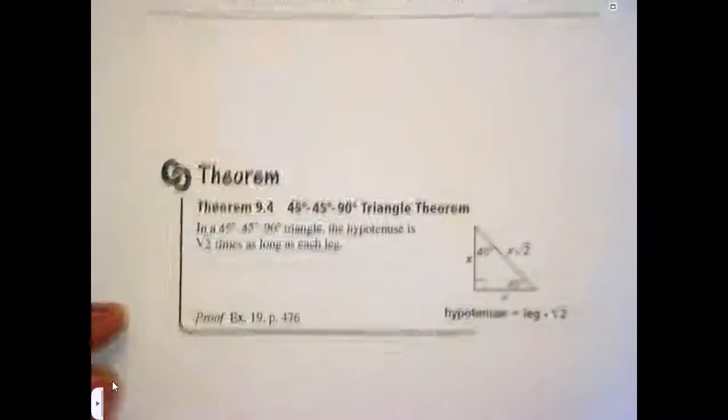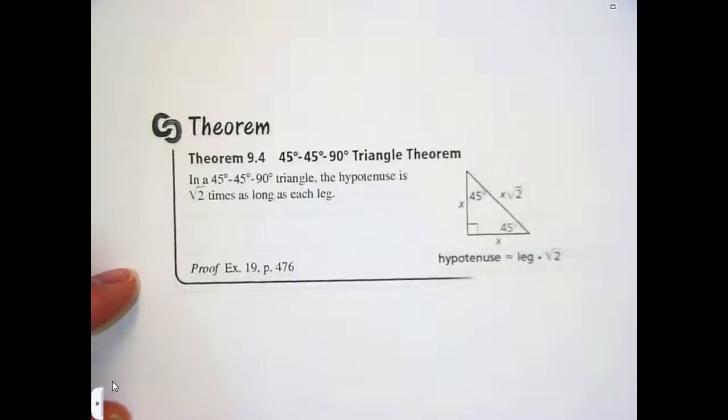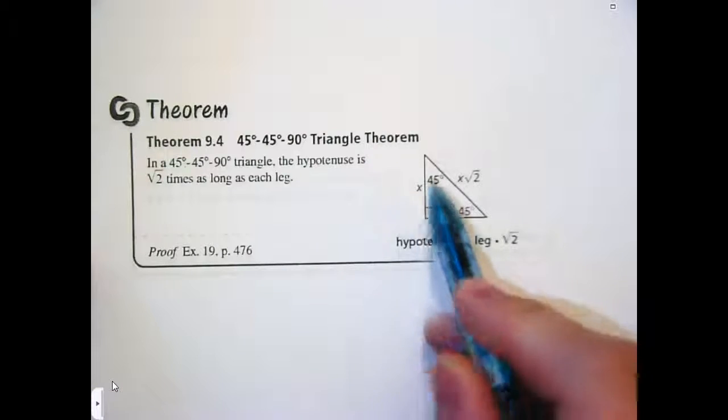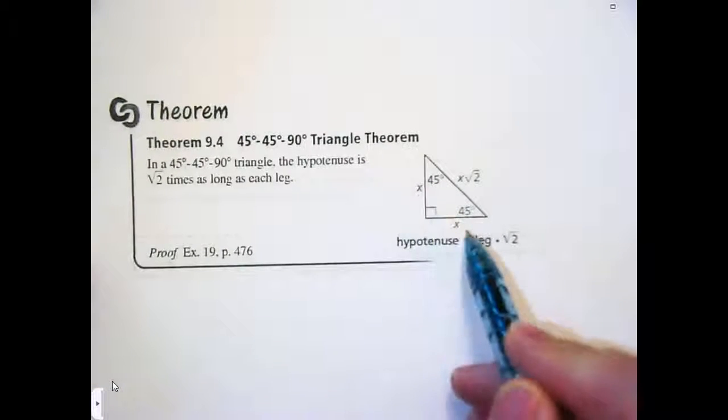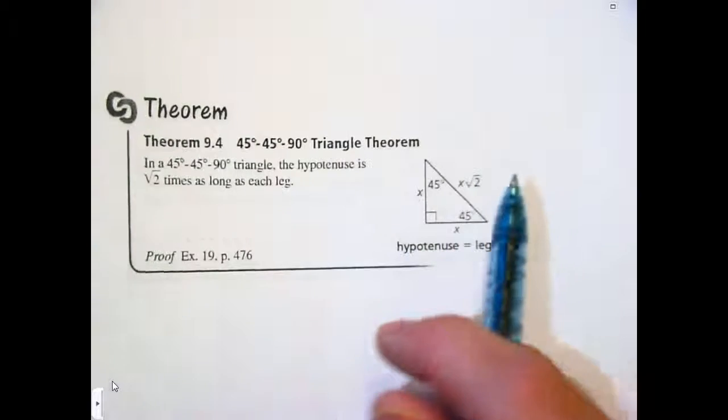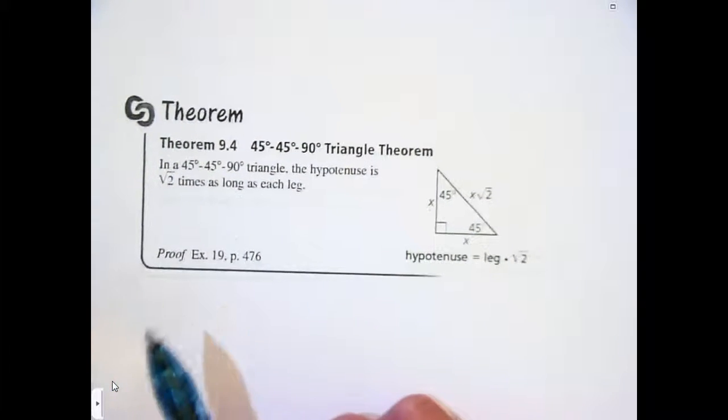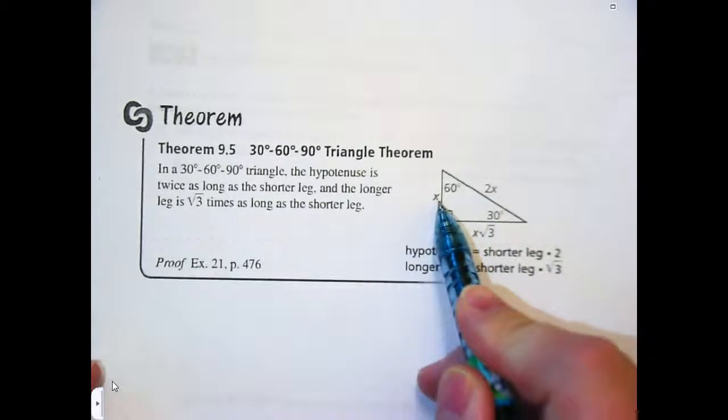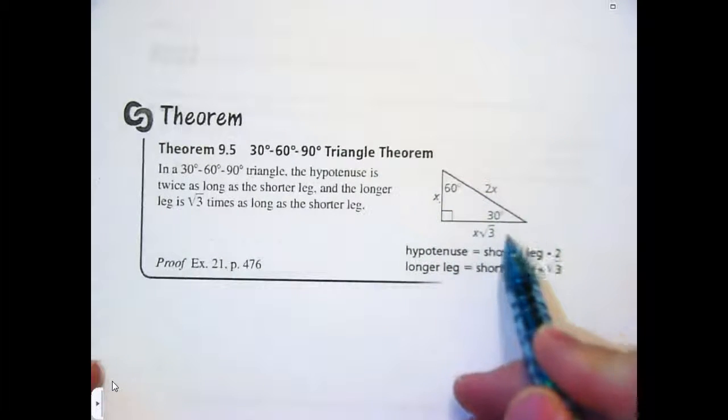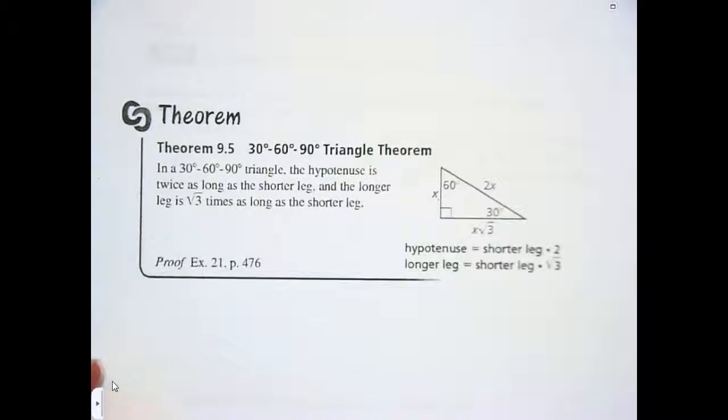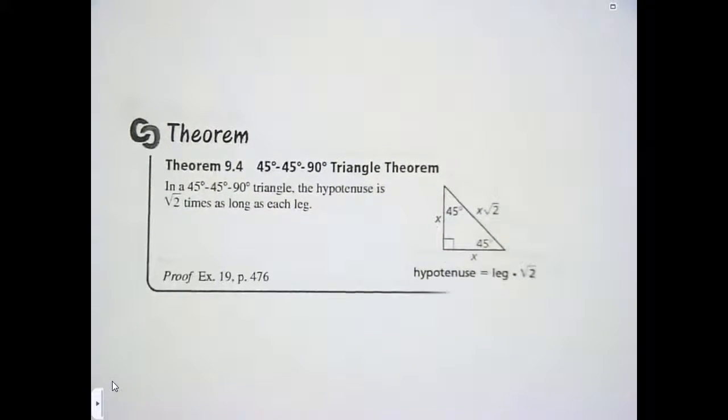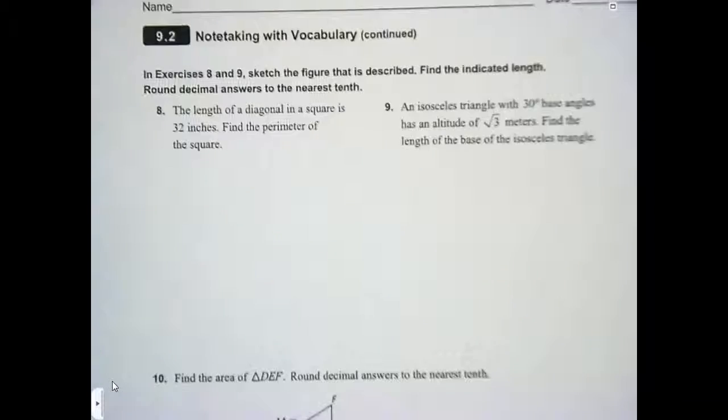All right, so just a quick recall from yesterday. On a 45-45-90, our side lengths: if this is x, that's x, that's x root 2. That's the relationship on a 45-45-90. We talked about how to find those using the Pythagorean theorem. And then on a 30-60-90, you've got x, the hypotenuse is then 2x, and the other leg, the longer leg is x root 3.